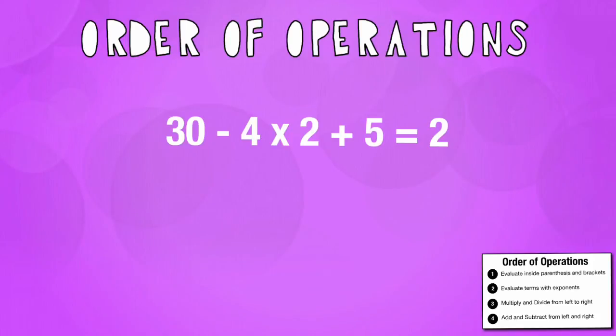Now when we're given an expression with already an answer, we have to see if it works out. So in this problem, we'd have to do the 4 times 2 first and get 8. 30 minus 8 is 22 plus 5 is 27. That is not the answer of 2.